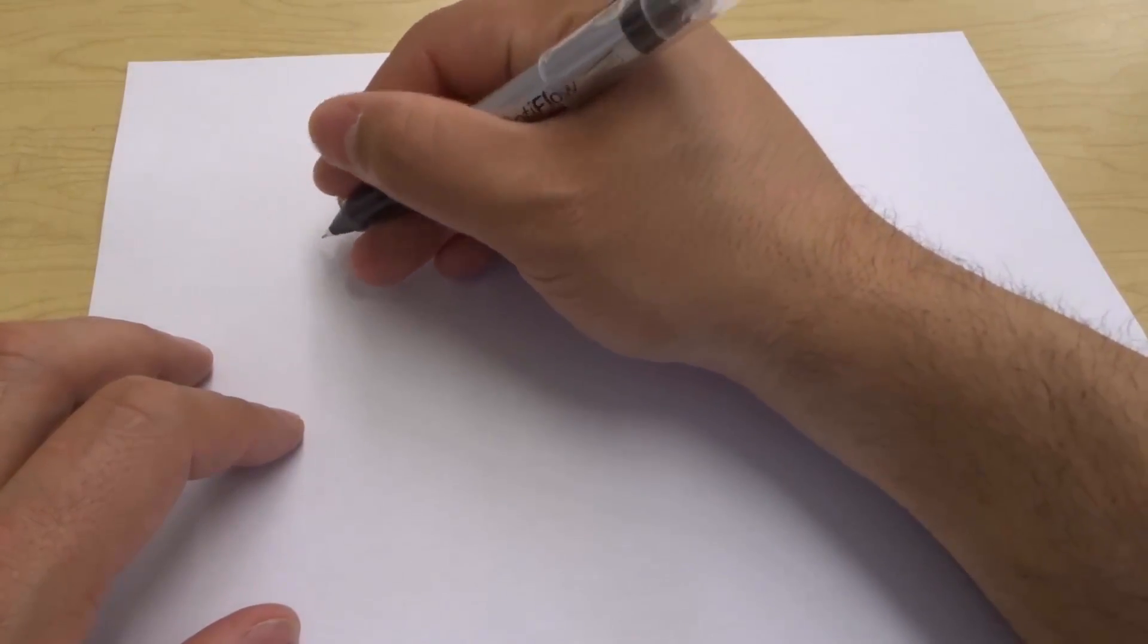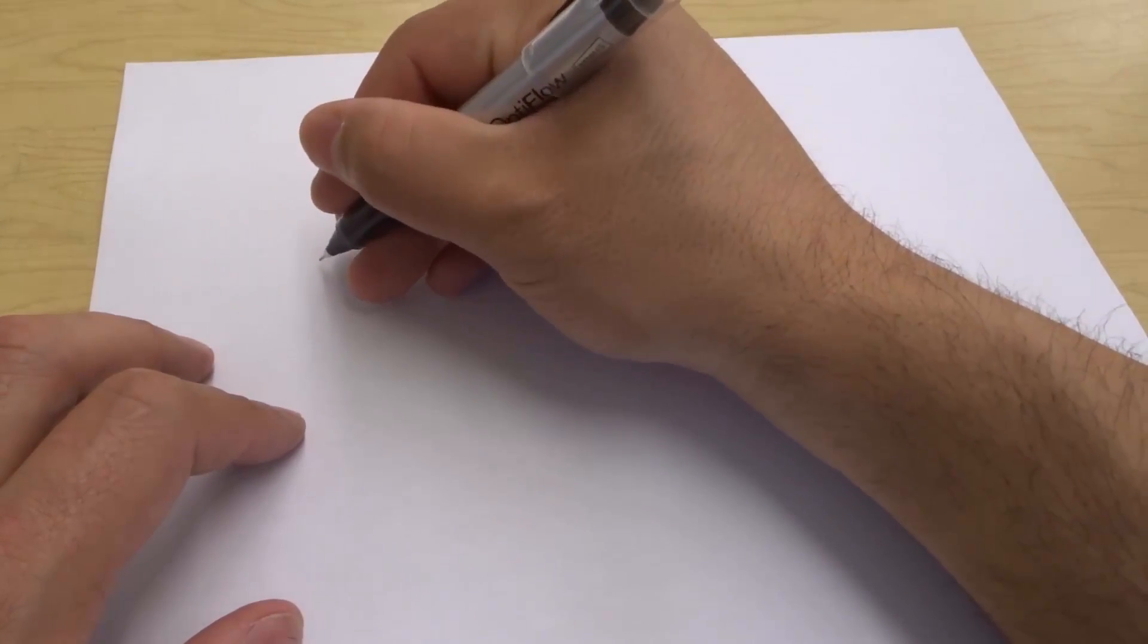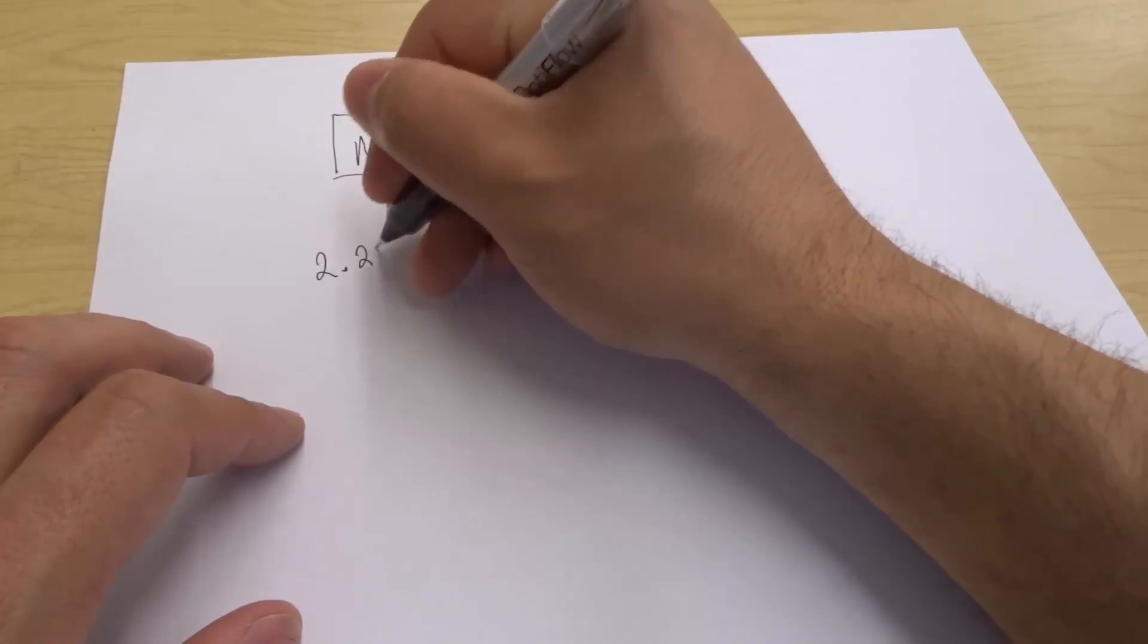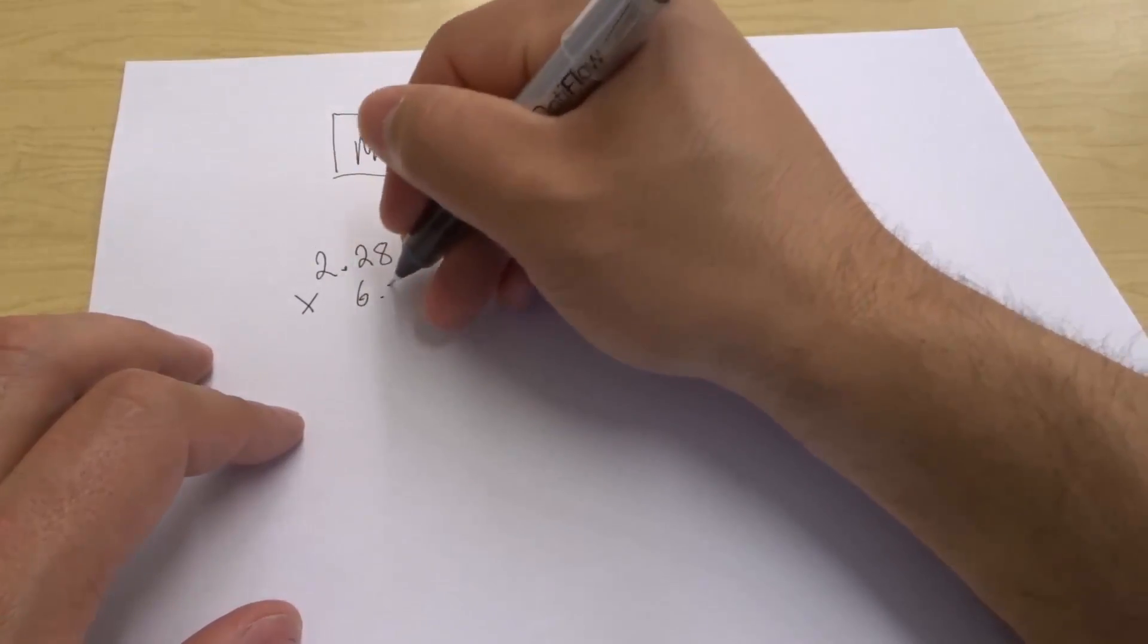I'm going to write down a decimal multiplication equation right here. We're going to do 2.28 and multiply it by 6.2.